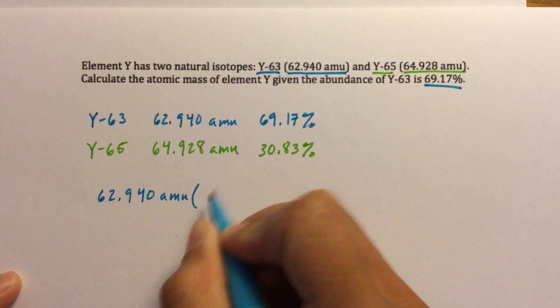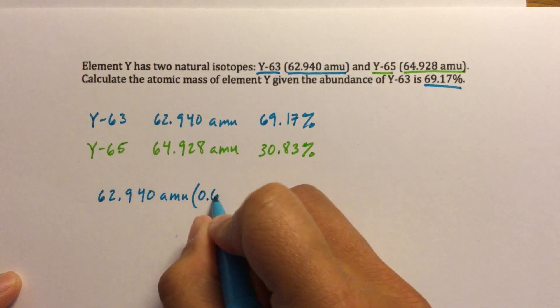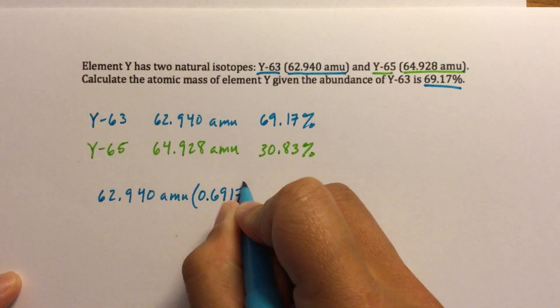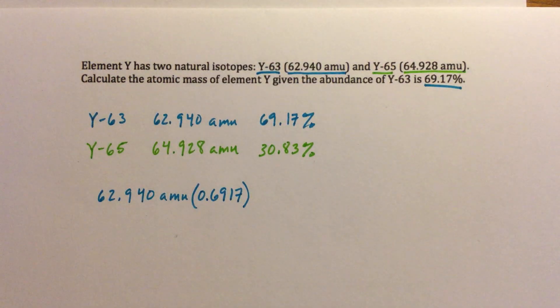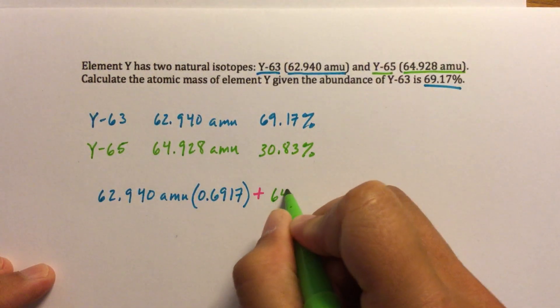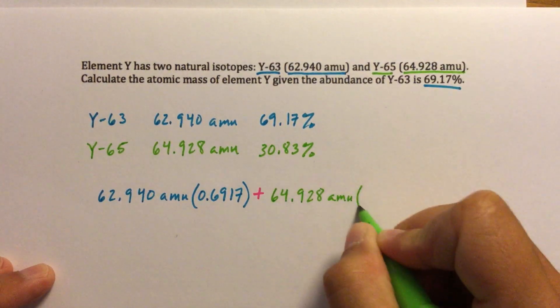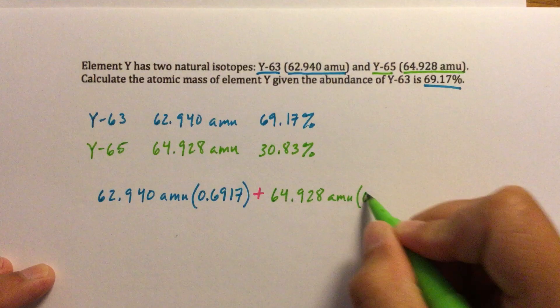So I'm going to take the first mass, multiply it by our percent abundance, but I'm going to move the decimal here. And we're going to add that to the Y-65 information. Turn that into a decimal.